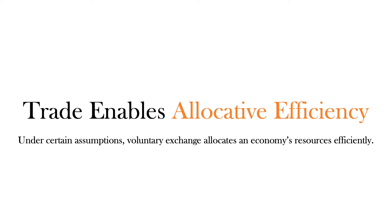The bottom line is that trade enables allocative efficiency. When the old shoe or old book flows from the person who values it less to the person who values it more, you get better allocations. In the economy there are two concepts of efficiency: the first is allocative efficiency, the other is productive efficiency — we'll come to that later. Under certain assumptions, voluntary exchange, where you're not being forced to trade, allows the economy's resources to be allocated more efficiently. To understand this we have to get into a little bit of theory with the Edgeworth Box.